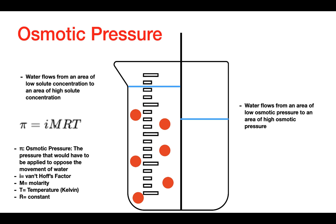So when you increase the number of particles in solution, you increase the osmotic pressure. What follows from that is that water flows from an area of low osmotic pressure — where there are no particles in solution — to an area of high osmotic pressure.